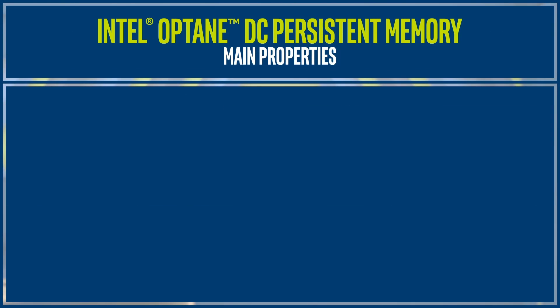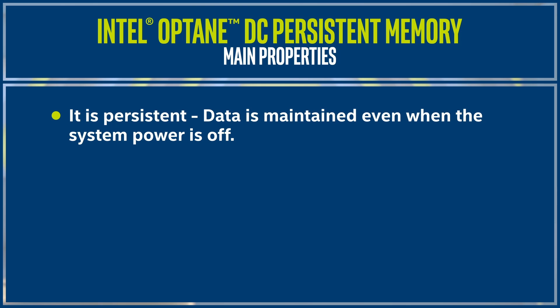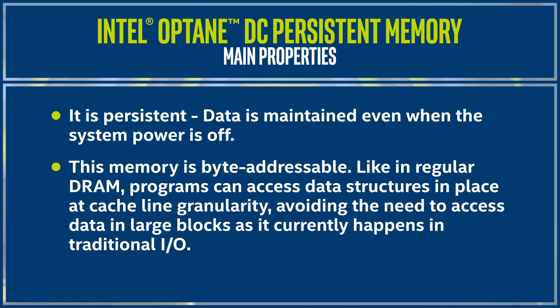Intel Optane DC Persistent Memory is a new type of persistent memory, sometimes called storage class memory. This new memory has two main properties. First, it is persistent — data is maintained even when the system power is off. In addition, this memory is byte addressable. Like regular DRAM, programs can access data structures in place at cache line granularity, avoiding the need to access data in large blocks as happens in traditional I/O.